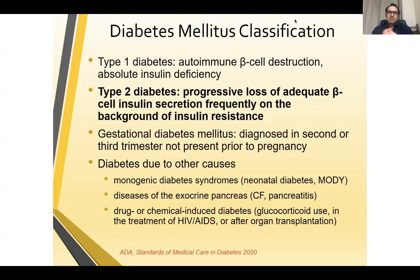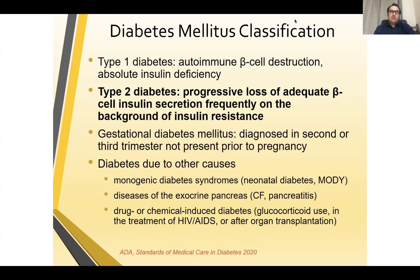Gestational diabetes is a temporary diabetes diagnosed in the second or third trimester and is not present prior to pregnancy. Diabetes due to other causes can be due to monogenic diabetes, exocrine pancreatic dysfunctions like cystic fibrosis, fibrocalculus, or chronic pancreatitis, some drugs, or chemicals like glucocorticoids, treatment of HIV, and post-transplant diabetes. The two most important types are type 1 and type 2, and among them 90% of the spectrum is due to type 2 diabetes.